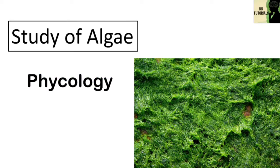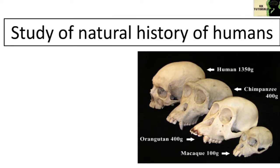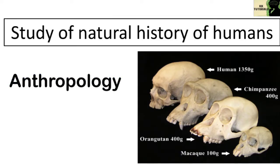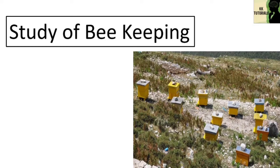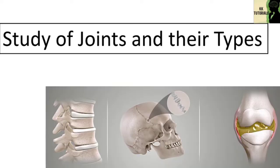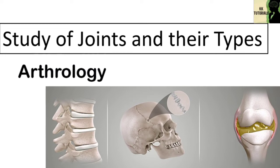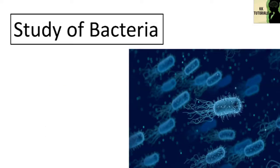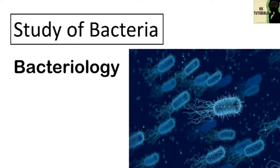The study of algae is called phycology. The study of natural history of humans is called anthropology. The study of beekeeping is called apiculture. The study of joints and their types is called arthrology. The study of bacteria is called bacteriology.